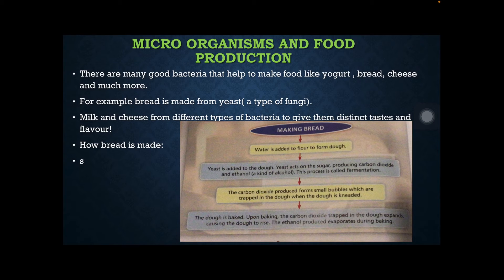Yeast feeds on the sugar, producing carbon dioxide and ethanol — a kind of alcohol. This process is called fermentation. The carbon dioxide produces small bubbles which are trapped inside the dough when the dough is kneaded. When the dough is baked, the carbon dioxide trapped inside expands, causing the dough to rise. The ethanol produced evaporates during baking.